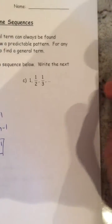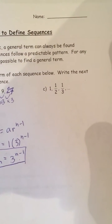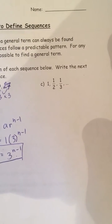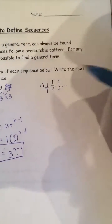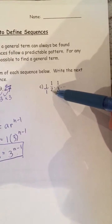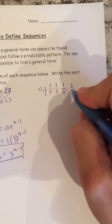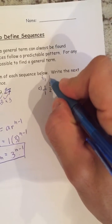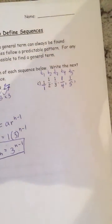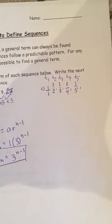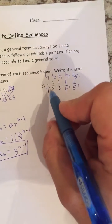Moving on to question C: the sequence is 1, 1/2, 1/3, and so forth. After looking at this, you notice the first term can be written as 1/1. So the first term is 1/1, the second is 1/2, the third is 1/3, the fourth would be 1/4, and the fifth 1/5. Whatever the term number is, the denominator matches it while the numerator stays 1. So term 100 would be 1/100.